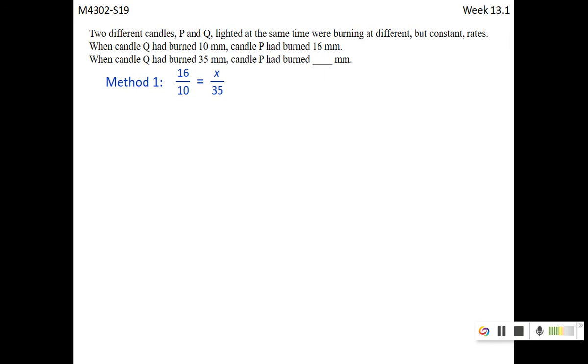Now let's take a look. 16 over 10. The ratio 16 over 10 has a value of 1.6. Then can you explain the meaning of 1.6? If you look very carefully, every time Q burn 10, P burn 16. That means every time Q burn 1mm, P will burn 1.6mm. So that's one way of explaining.